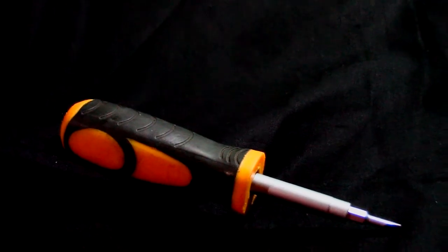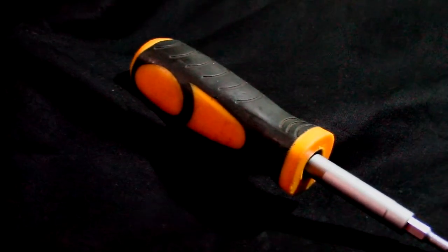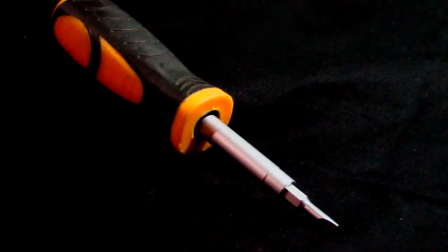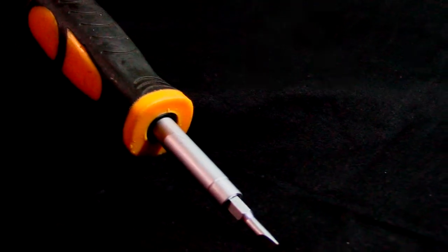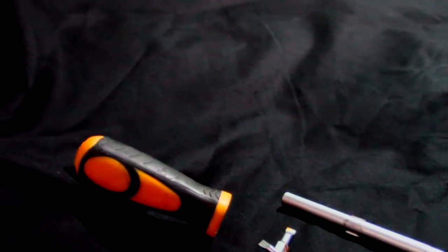We've all seen the 6-in-1 where you have two different sizes of Phillips, a 02 and I think a 00 on one side and two flatheads, two different sizes. And then you have the hex on one side and one on the other and you can pull it out and flip it over.